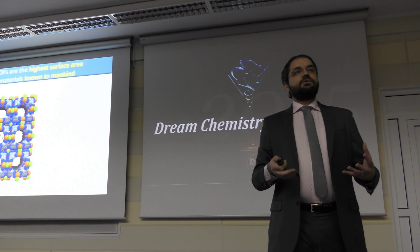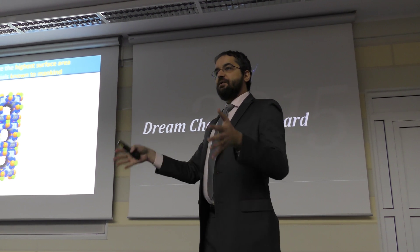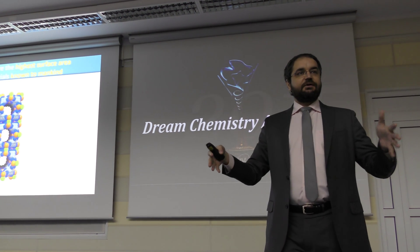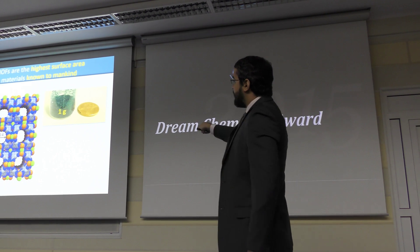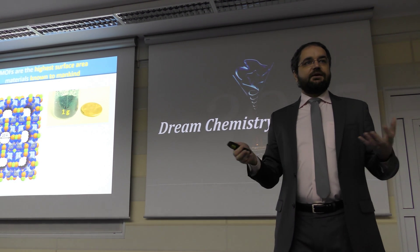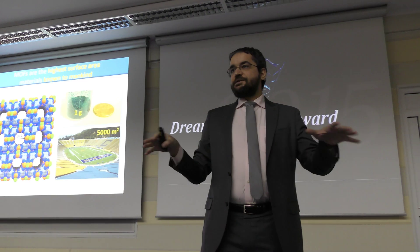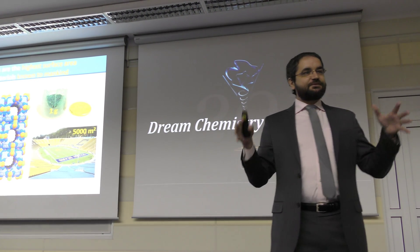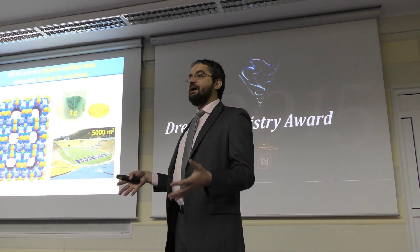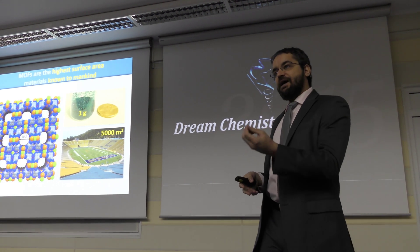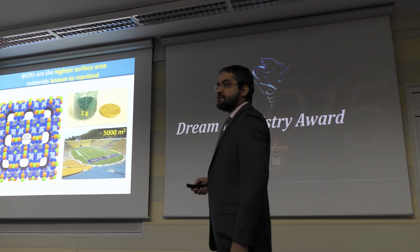Why are these materials so exciting? If you take one cubic meter of a crystal and unfold its internal structure, its internal surface area — with one gram of material, which is not a whole lot — you would be able to cover an entire football field. Whether it's American football or European football, it's about the same size. That's 5,000 square meters per gram. That is by far the largest surface area of any material known to mankind. And that is important because if you want to build a catalyst, you want to have a lot of active sites, a lot of catalytic active sites per surface area.